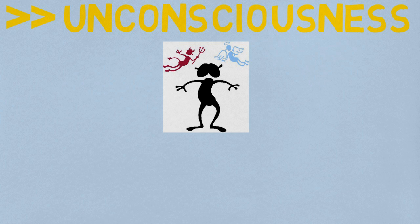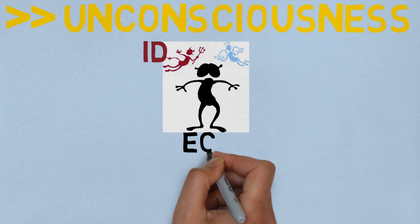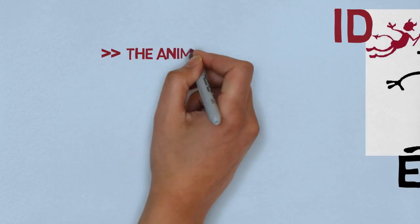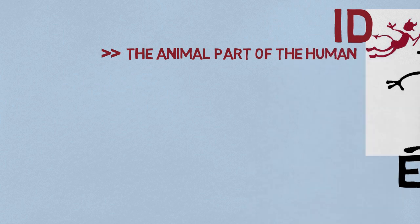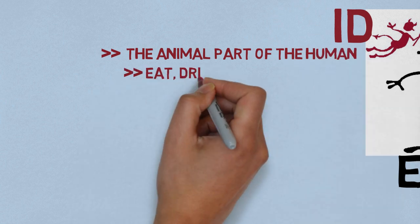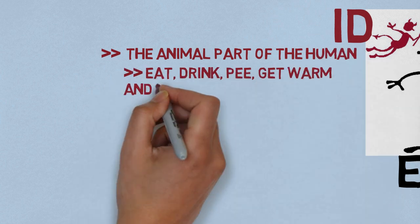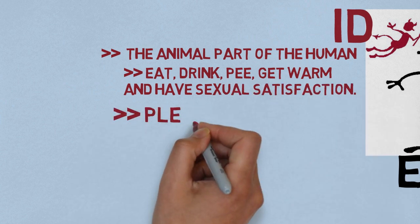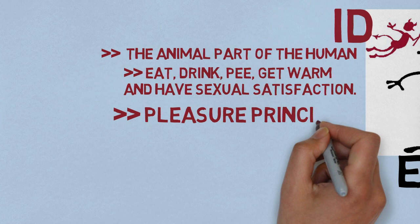Those three parts are the ID, the Ego, and the Super Ego. The ID is said to be the animal part of the human, present at birth. This means that he only wants to eat, drink, pee, get warm, and have sexual satisfaction. In the words of Freud, the ID works on the pleasure principle of polymorphous perversity.